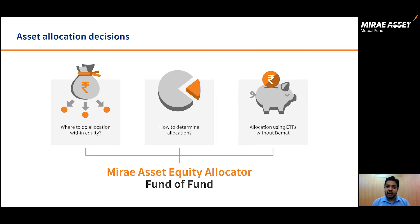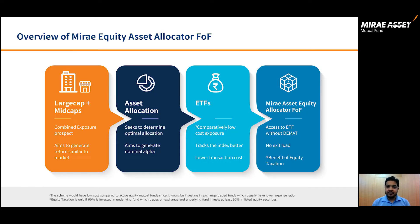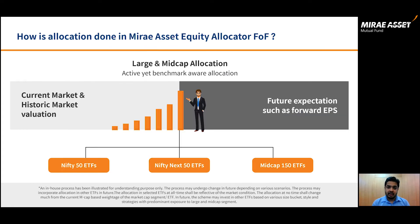Mirai Asset Equity Allocator Fund of Fund seeks to provide a solution to address allocation within equities. This fund of fund will aim to provide exposure to the entire large-cap and mid-cap segment by investing in multiple ETFs — like Nifty 50, which tracks the top 50 blue-chip large-cap stocks; Nifty Next 50, which tracks the remaining 50 large-cap stocks; and Nifty Mid-Cap 150, which tracks all 150 mid-cap stocks. A rule-based model will change the allocation in the large-cap and mid-cap ETFs based on current valuations and relative attractiveness, with an aim to generate additional alpha.